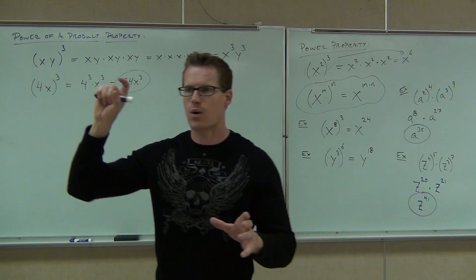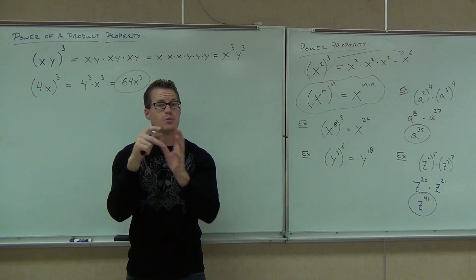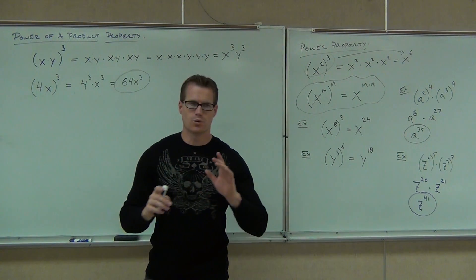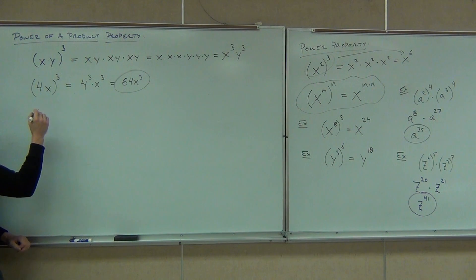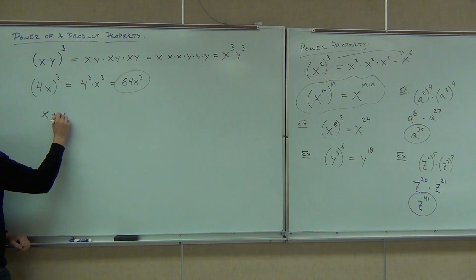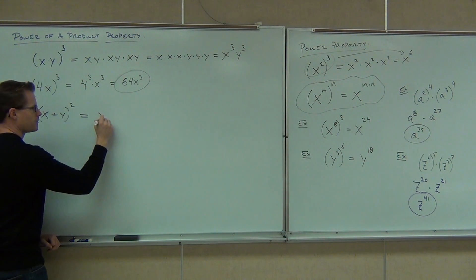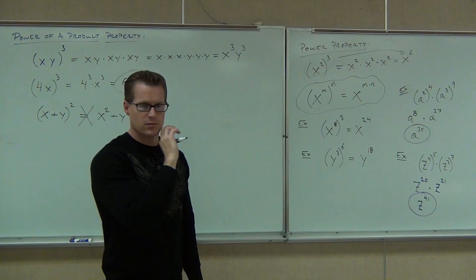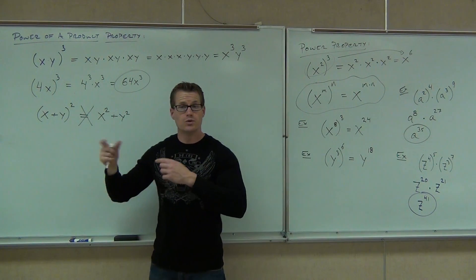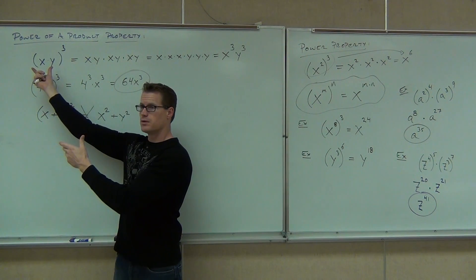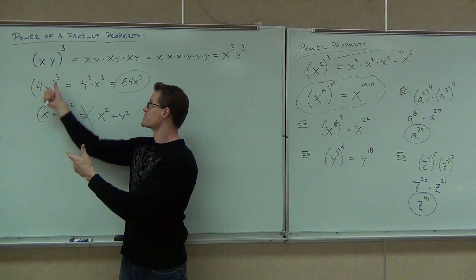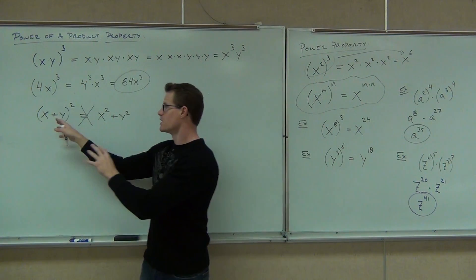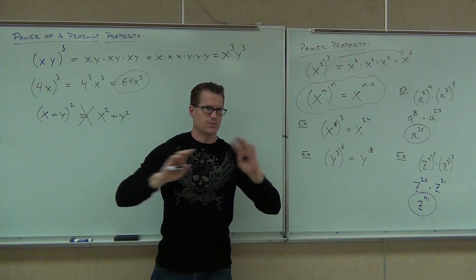So the power of a product property says that a power is basically distributed across multiplication inside of parentheses. One big note I must have you put on your paper right now. So even if you're comfortable with this, great, you won't be comfortable with this until I tell you it. This is never true. x plus y quantity squared equals x squared plus y squared. This is never, ever true. Ever, ever true. That exponent will not go across addition. Do you see the difference between this problem and this problem? Yeah, this one, well that's that plus right there. That's a product, that's a multiplication. This doesn't happen. Okay, so write this on your paper, but then cross that out because it's not equal. We're going to talk about how to do this in the next section.